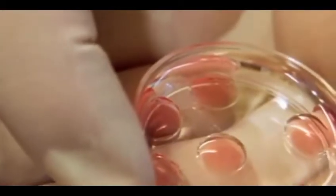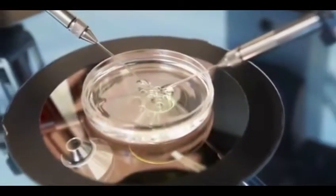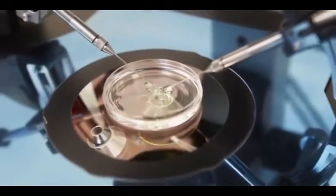Embryos are then monitored for three to five days in the lab. Sometimes, the lab may create zona pellucida around some of the embryos. This assisted hatching helps embryos to get implanted into the uterus.